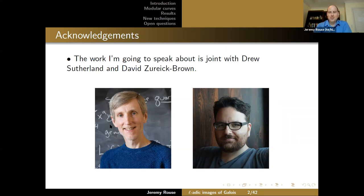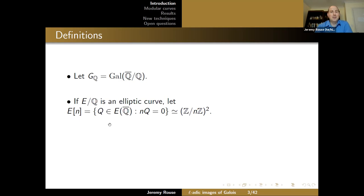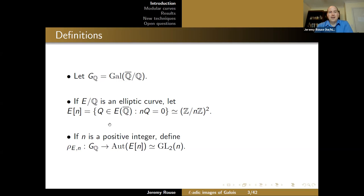The talk starts the way basically every number theory talk starts: with G_Q, the absolute Galois group of Q-bar over Q. If you have an elliptic curve over Q, you let E[N] be the set of points in E(Q-bar) that have order dividing N. As an abelian group, this is isomorphic to (Z/NZ)^2. The absolute Galois group acts on everything, so if N is a positive integer, we have the mod N Galois representation attached to E, which is a homomorphism from G_Q to GL_2(Z/NZ), abbreviated GL_2(N).